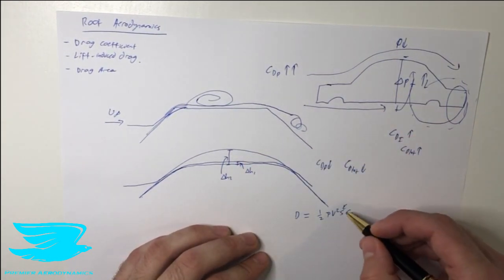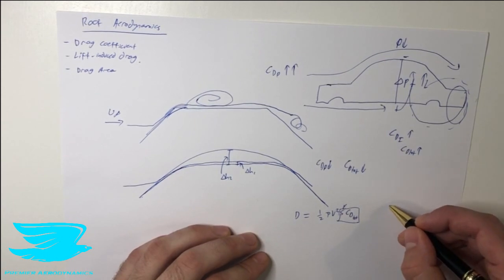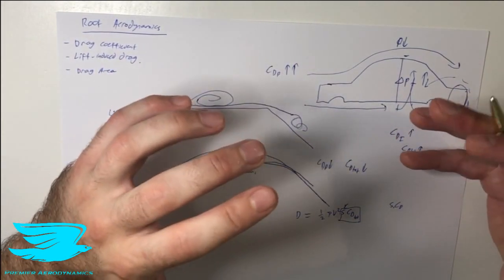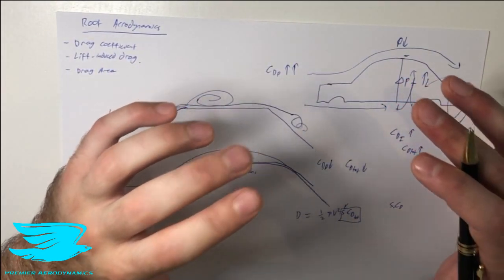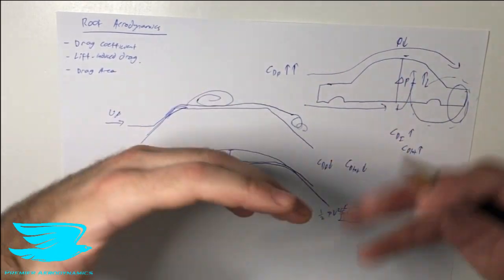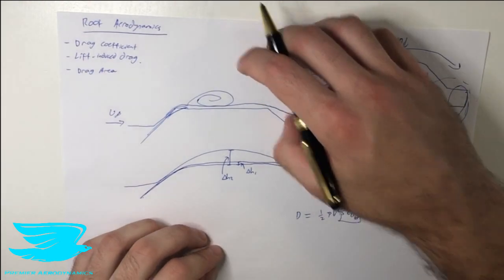What's more, in the automotive industry, we actually use this term which is called the drag area, and this is just the cross-sectional area times the drag coefficient. And the reason why we use this is because it is, practically speaking, more of a better resemblance of a car or any vehicle's drag production than just the drag coefficient. So let me explain why.